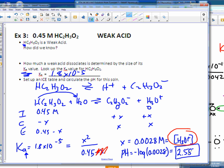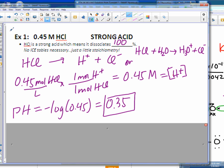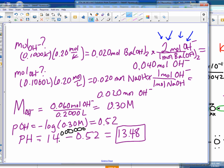So, the pH of this weak acid solution is 2.55. That's significantly less acidic than the 0.35 pH of the strong acid. The strong acid produces a lot more H+ than this weak acid. That's the whole point of what we're looking at here.